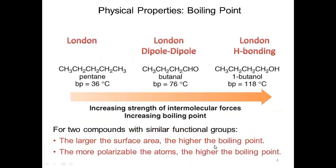Here we have pentane — no polar covalent bonds, no dipole, no hydroxyl or NH groups, no fluorines — so this is strictly London forces. Comparing it to butanal, which is an aldehyde, look at the difference in boiling point: 36°C versus 76°C. The aldehyde has a strong dipole, so dipole-dipole interactions between butanal molecules serve to increase the boiling point.